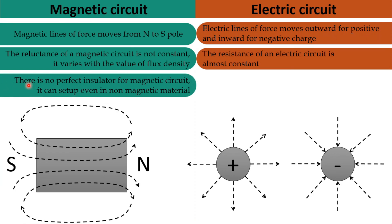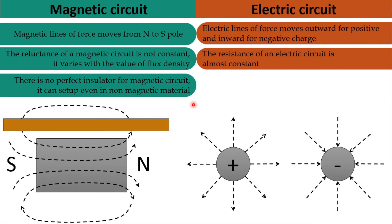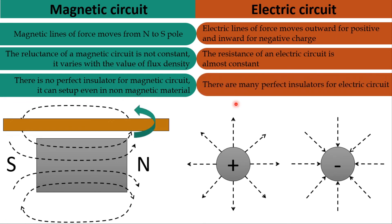There is no perfect insulator for a magnetic circuit — flux can set up even through non-magnetic material. For example, placing a non-magnetic material in the path does not stop the magnetic flux. In contrast, there are many perfect insulators for an electrical circuit; placing an insulator between positive and negative charges prevents electrical lines of force from crossing.